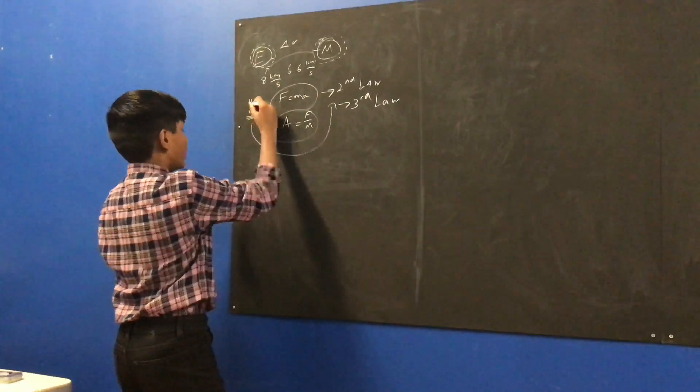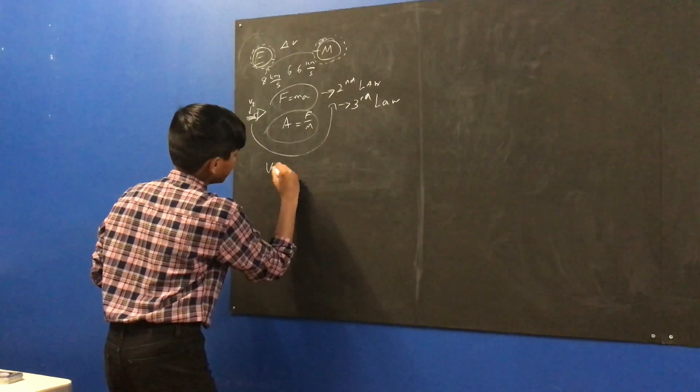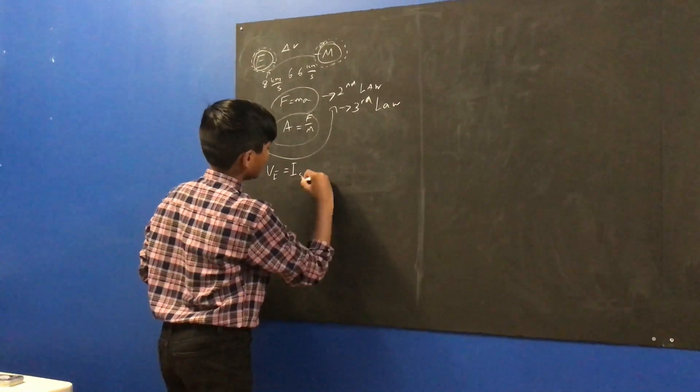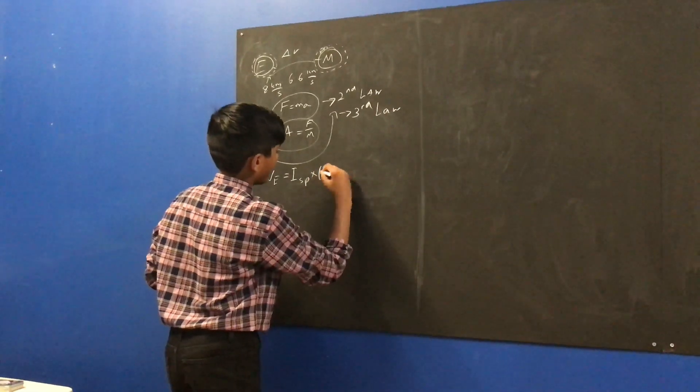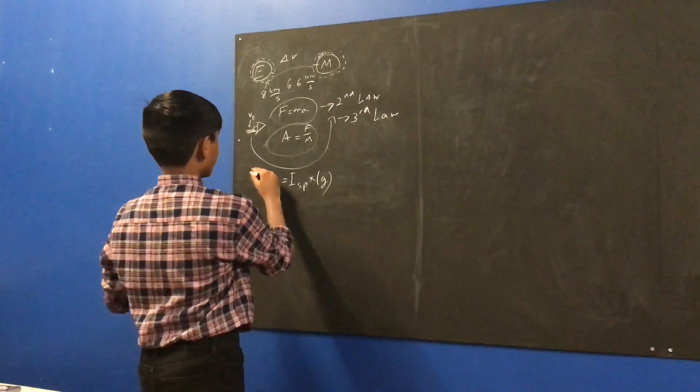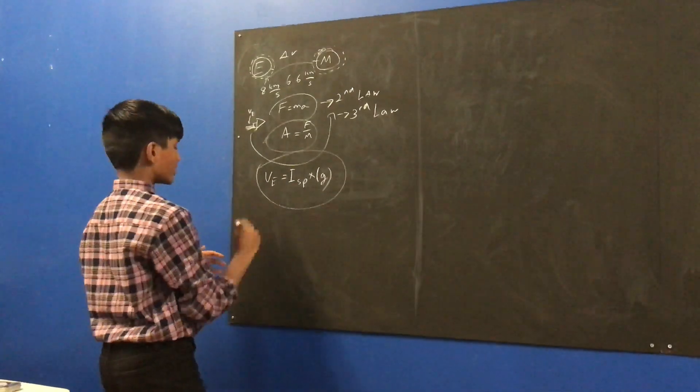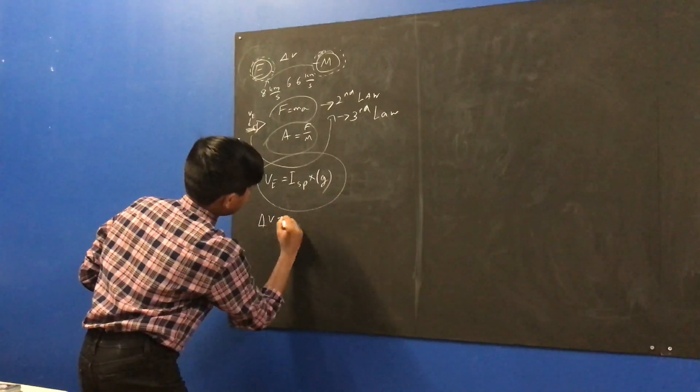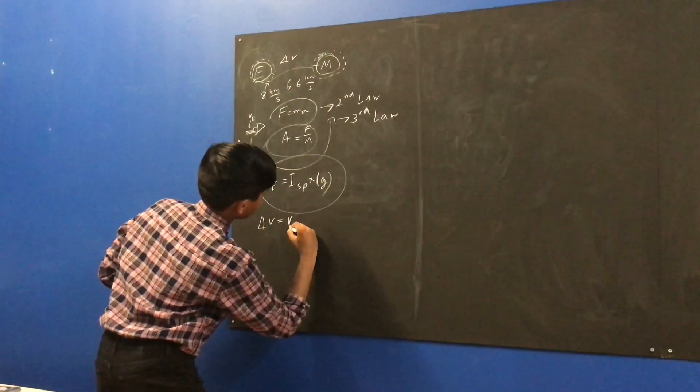Now, what you have here is your exhaust velocity is actually equal to your specific impulse times G. Now, the rocket equation is actually your delta V, what your delta V is equivalent to, which is your exhaust velocity,